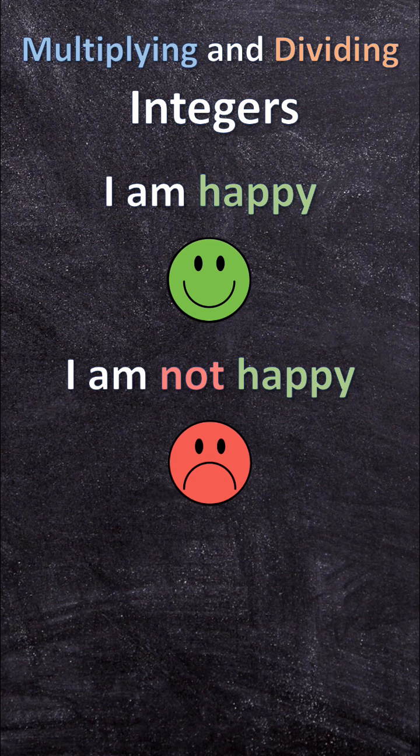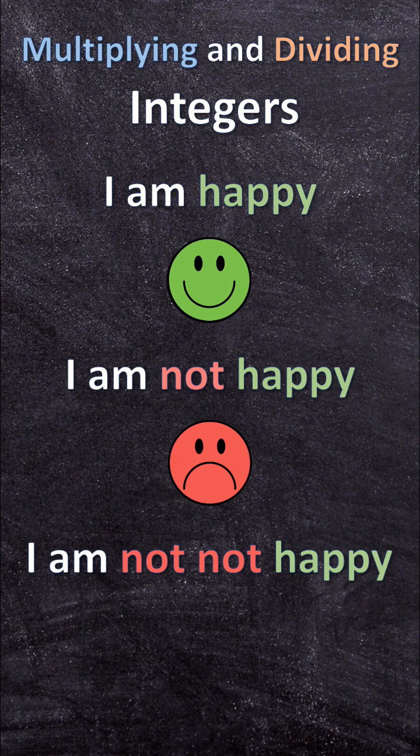But let's take this negative sentence and I add another negative, I am not not happy. That makes it positive again. I am happy. So two negatives makes a positive again.